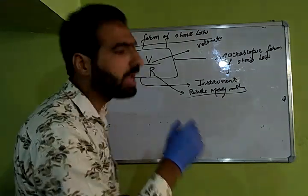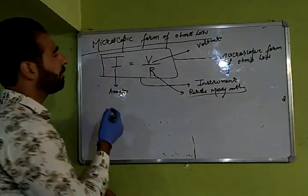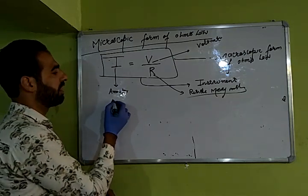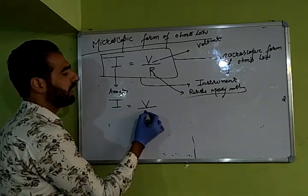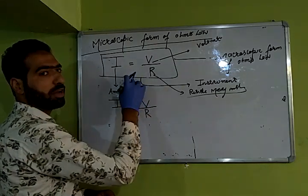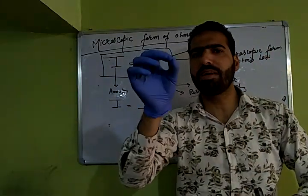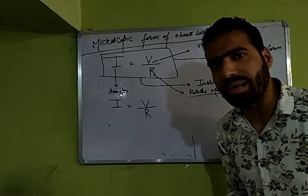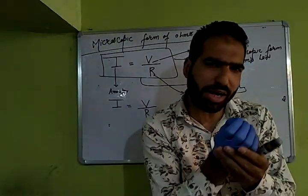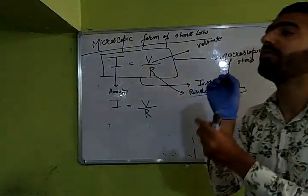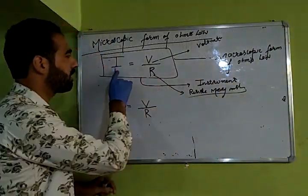Potential difference is also a macroscopic quantity. So I = V/R is known as the macroscopic form because all variables and parameters coming in this form can be measured directly by an instrument. Furthermore, they are defined for bulk — for the whole material, for the whole conductor — not for a particular point.